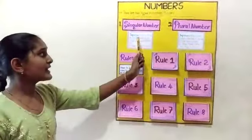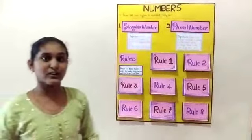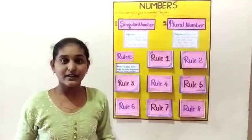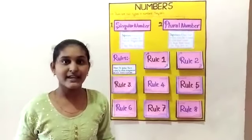So what is singular number? A noun that is one in number is called a singular number. Examples: box, table, chair, book, pen, etc.